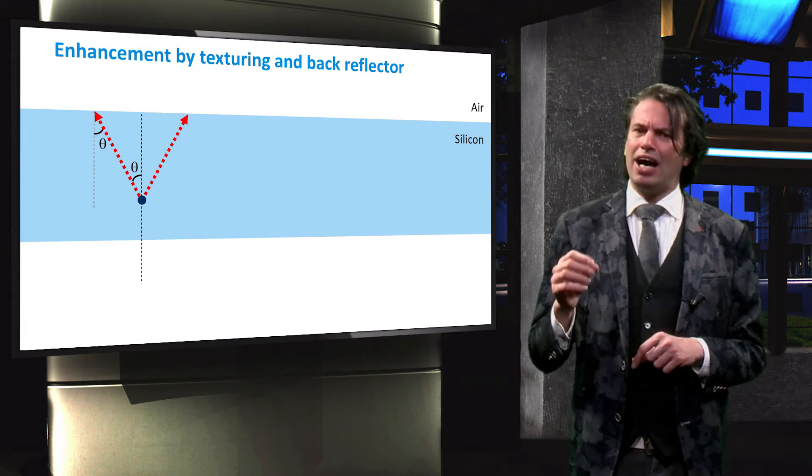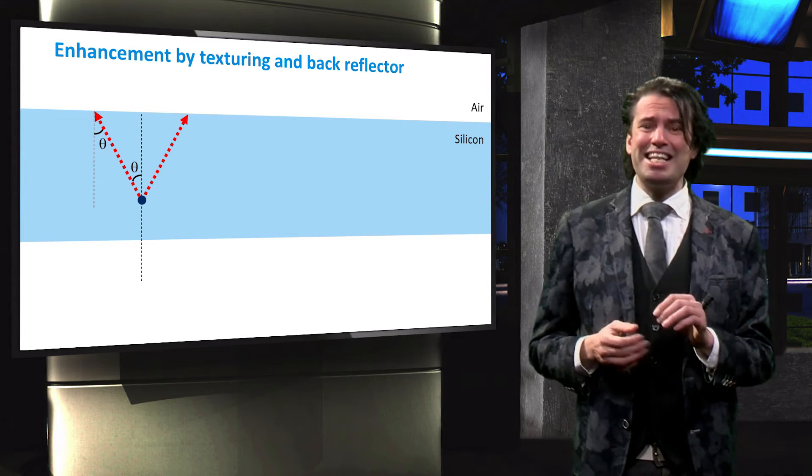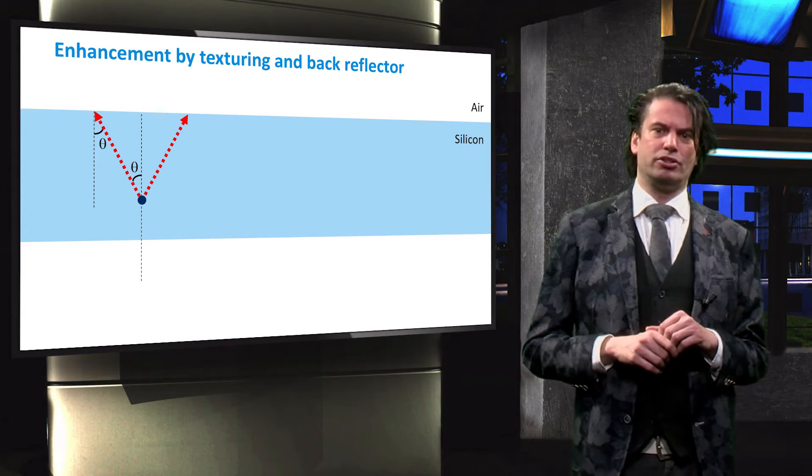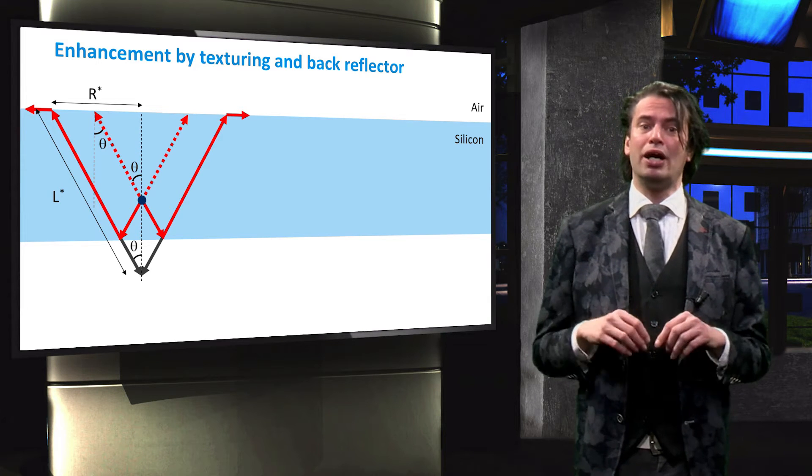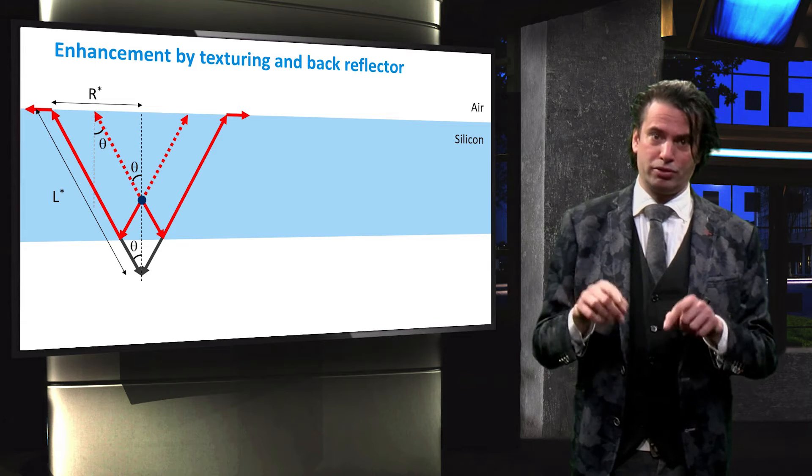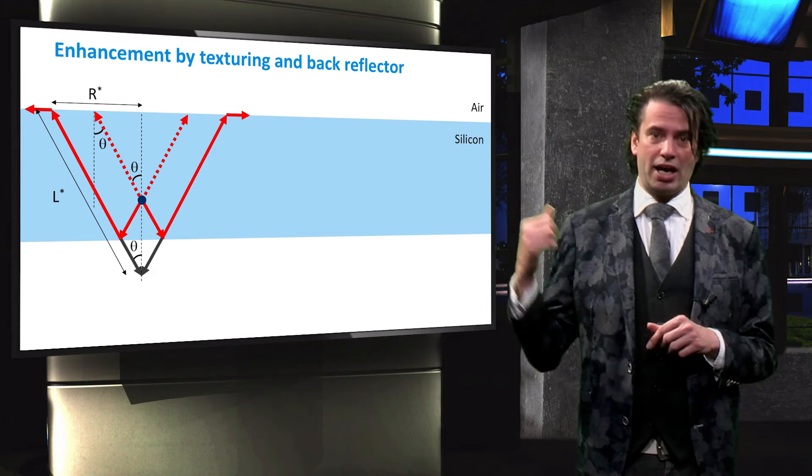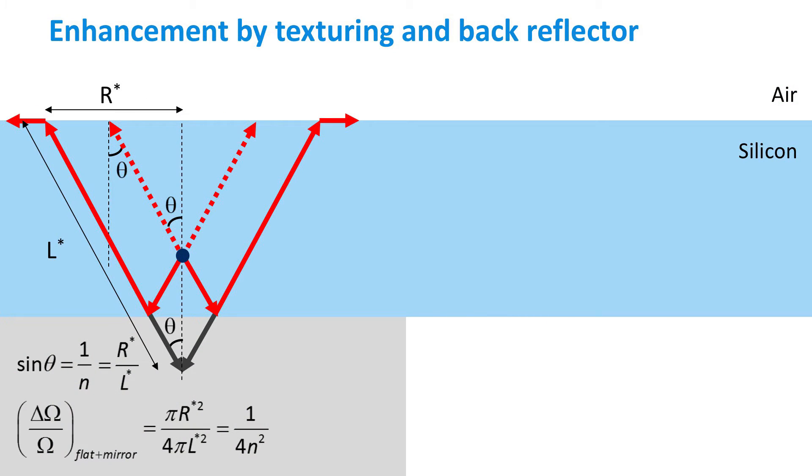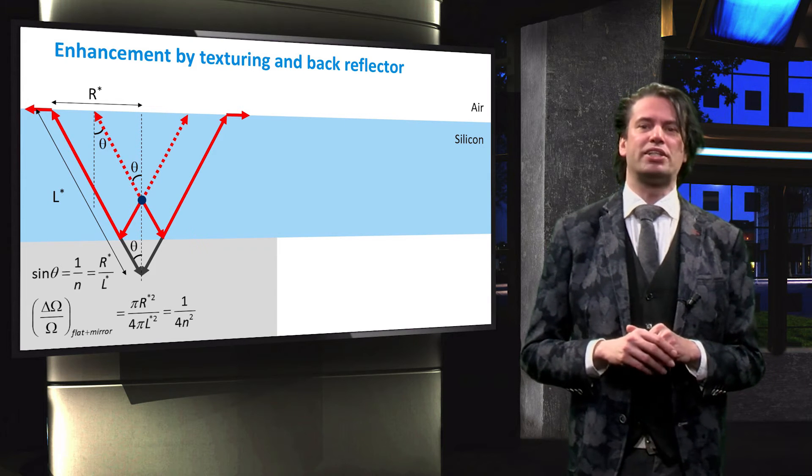We will now look at the light reaching a point in the absorber layer bulk in the case of an ideal back reflector. We introduce the same figure again. The cone of incidence is now increased due to light reflecting off the back surface. This causes R and L to be increased as well, as denoted by the asterisk. We can see by extending the lines beyond the back surface of the cell that the relation sine theta equals 1 over N equals R over L still holds.